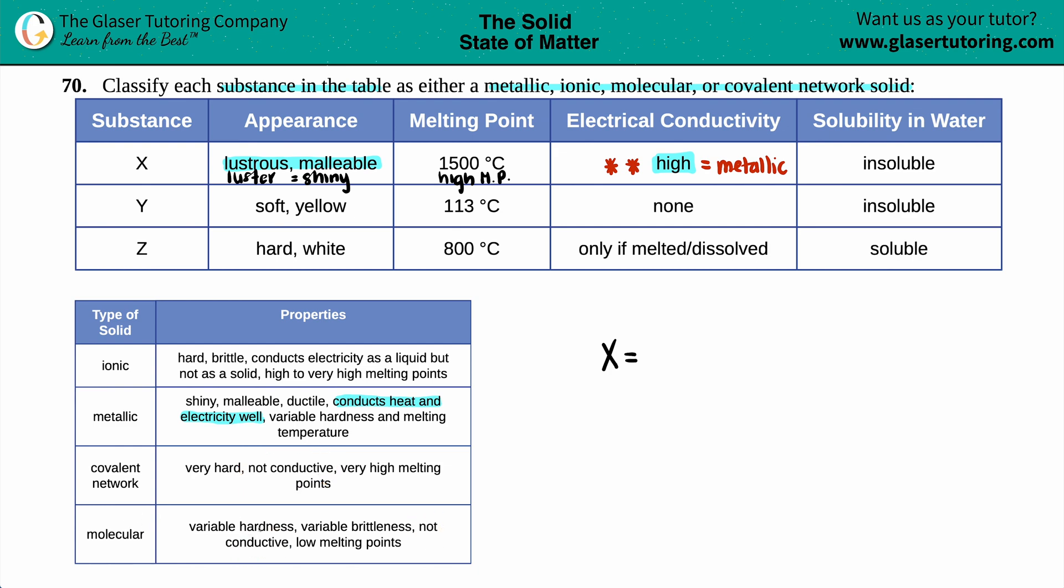So anytime that they're talking about high electrical conductivity, and it's obviously high, we know for a fact that this is metallic. That's the giveaway. So it's a metallic solid. Okay, moving on to the next one. Y. Why? Let's see.